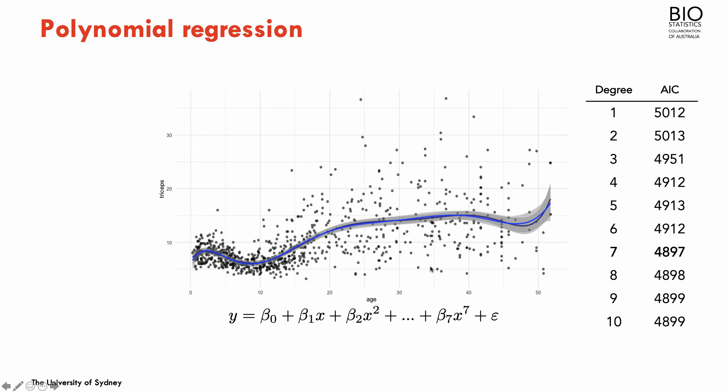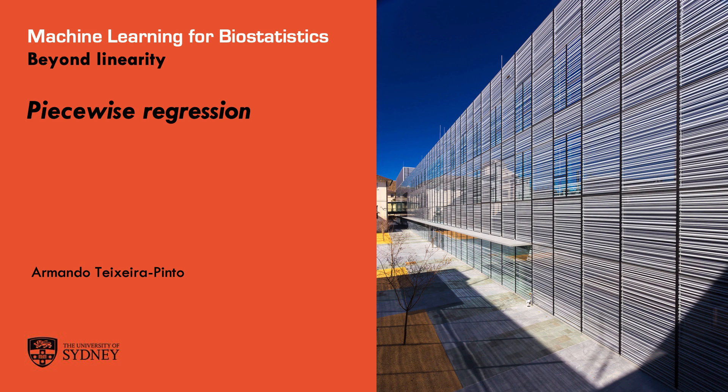So this would be one way of dealing with non-linearity. Despite the fact that going high in terms of the polynomial degrees offers a more flexible function, we're still trying to fit the entire data with one very structured form for the function f of age or f of x. Next we're going to see how we can even be more flexible in terms of fitting a curve to this data.